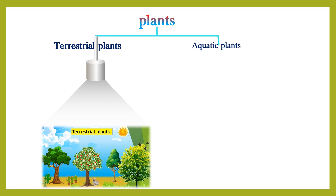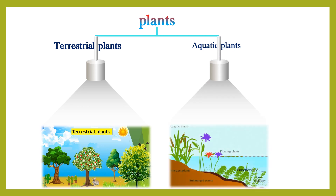Terrestrial plants are those which are grown on the land. When we see our surroundings, a number of plants grow on the land. These types of plants are called terrestrial plants. Aquatic plants are those which are grown in the water. In water bodies, some plants are grown, and those types of plants are called aquatic plants.